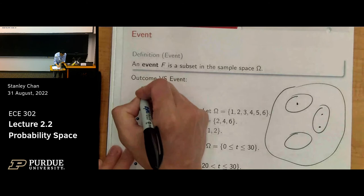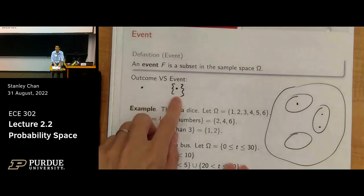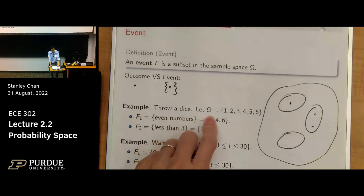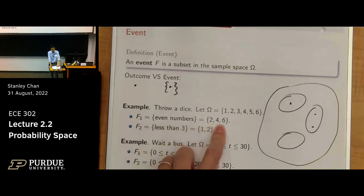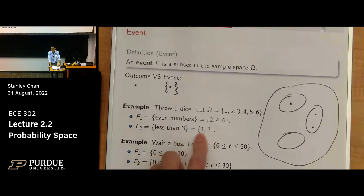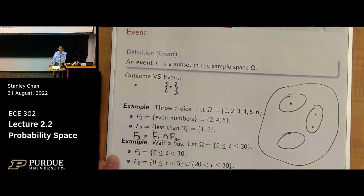The difference between an outcome and an event: an outcome is an element in the sample space; an event is a subset of the sample space. For example, throwing a die — the sample space is one through six. You can define an event as even numbers: the set {2, 4, 6}. Another event: less than three — the subset {1, 2}.